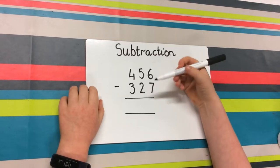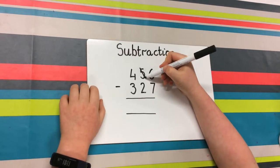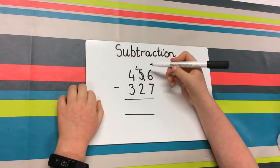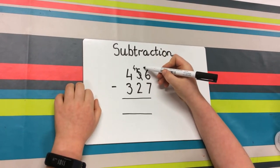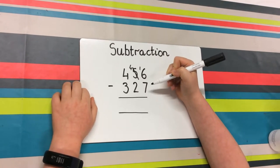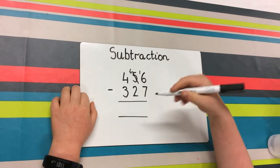So what you have to do is cross the 5 out and change that to 4, and then add 1 on to the 6. And now you have 16 minus 7. So 16 minus 7 is 9.